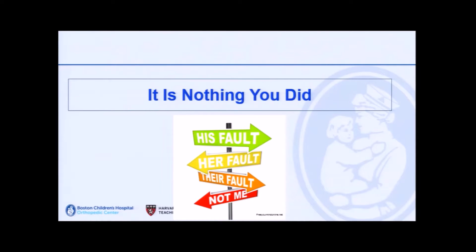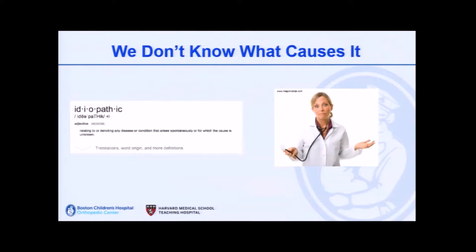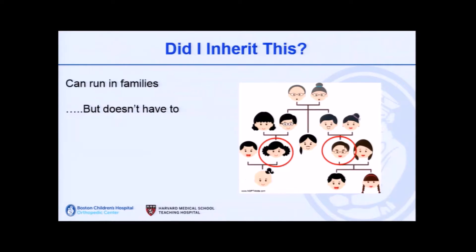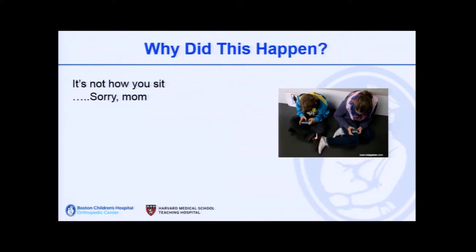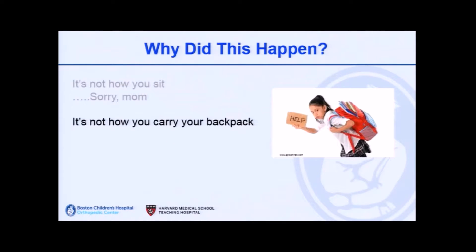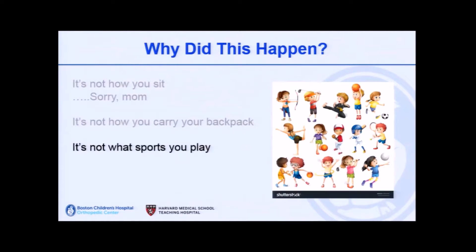This is nothing that you did. Idiopathic means we do not know what causes it. It can run in families, but doesn't have to — your sister might not have scoliosis but your cousin does. It's also not how you sit, not your posture, not how you carry your backpack, and not what sport you play. This is nothing that you have done to cause this. It just happens.